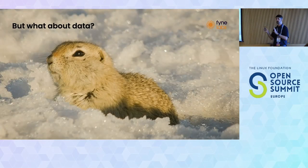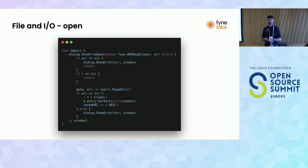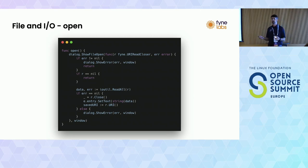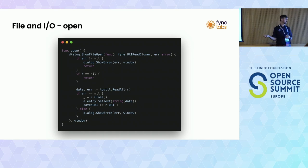What about the data? It technically works, but it's not going to be a functional application until we can work with files on the system. The first section shows opening a dialog - a show file open call that creates a file open dialog and shows it. The function we pass in is a callback for when the user has finished interacting. We check that no error occurred in opening the file; if there was an error, we use show error in the dialog package to show it to the user.